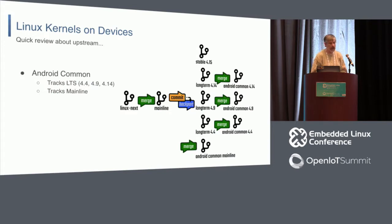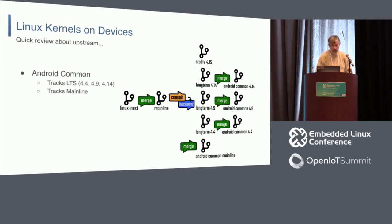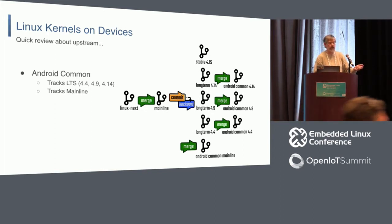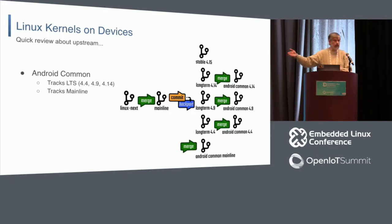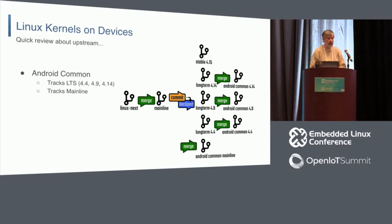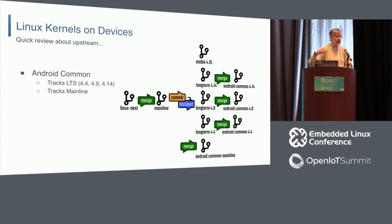This particular project I'm going to talk about is LKFT and something called Project Sharp. Starting with background: when it comes to the Linux kernel on devices, specifically the Android space, we've got the Android common kernel, which these days largely tracks to LTS kernel releases — that's 4.4, 4.9, and now 4.14. It also tracks mainline. Upstream of that you've got the LTS community working on everything from the current 4.15 stable to the 4.4 long-term.